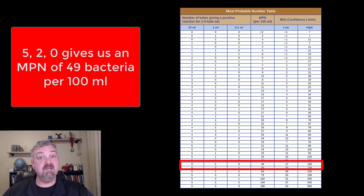So you find 5-2-0 on the table and you'll see that with 95% confidence we can say that there are 49 organisms per 100 milliliters in this sample. You see the ranges and stuff. This is far from perfect but it's a great guesstimate, a way to make an educated guess about how much contamination you see.